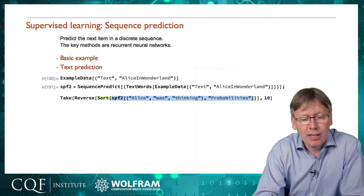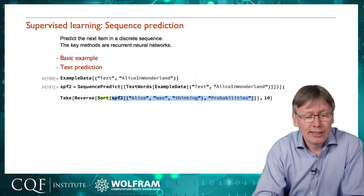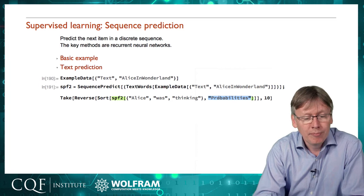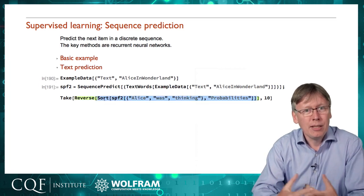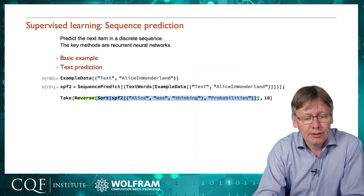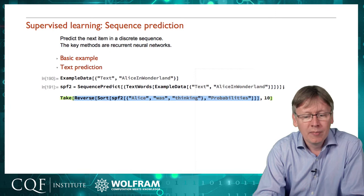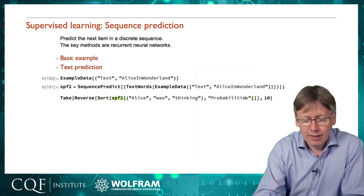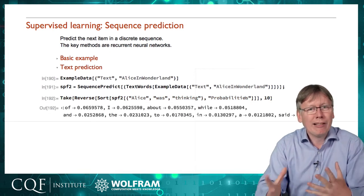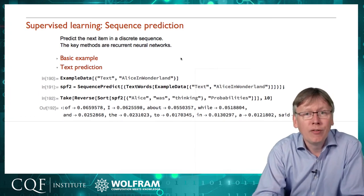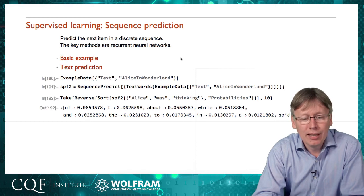We can now take that function and apply it to some phrase. I'm going to start with the phrase 'Alice was thinking.' And rather than just make the next prediction, I actually want to see all of the probabilities of all the different words that might come up. I'm going to sort those so that we get the most likely first — they actually come last, so I have to reverse it — and then take the first 10. The code around it is just tearing apart the prediction that comes out.